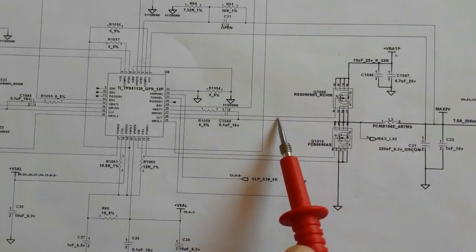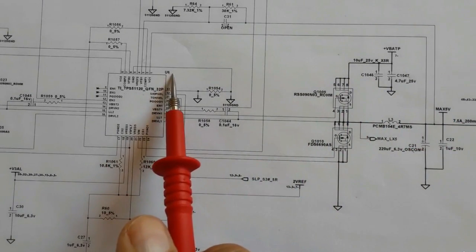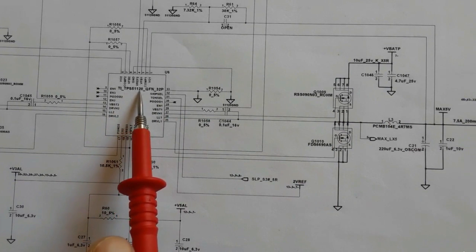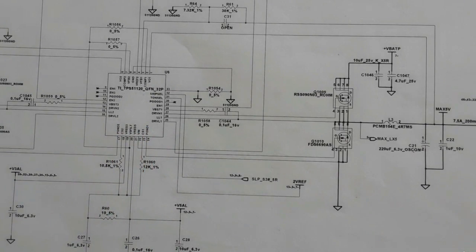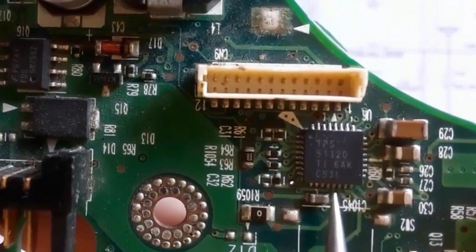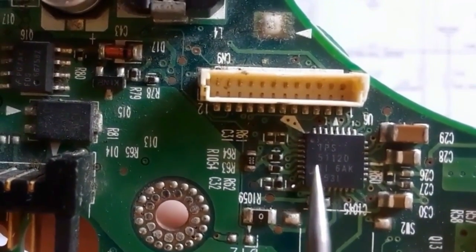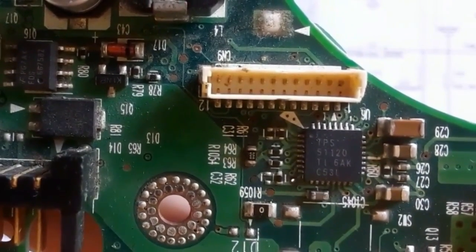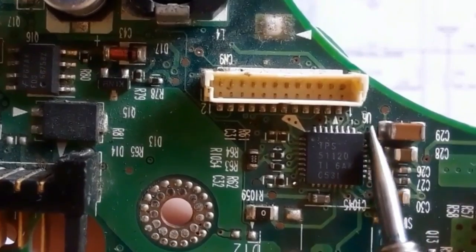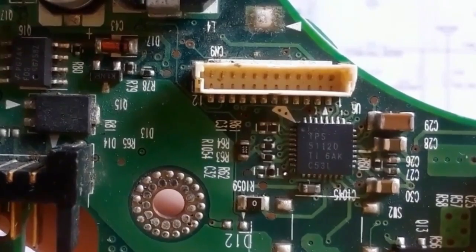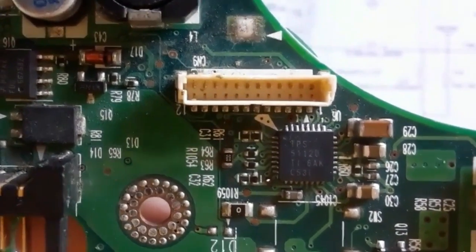Now we're going to look at these channels on the actual motherboard. Let's begin with the power management IC. As you can see, this is the TPS51120 on the motherboard — the same as in the schematic. This is the 3-volt/5-volt power management IC, referenced as U6. Remember, U is always the prefix for ICs.